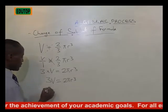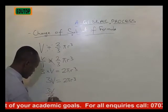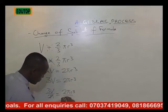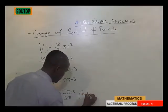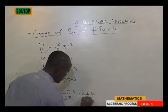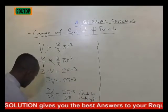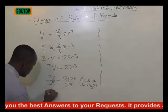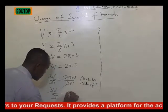It is this R we are looking for. So we will now divide both sides by 2 pi. It will now be 3V all over 2 pi is equal to 2 pi R cubed all over 2 pi. We cancel out the 2 pi, and now we have 3V all over 2 pi is equal to R cubed.